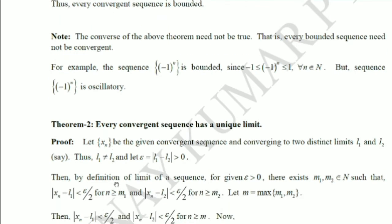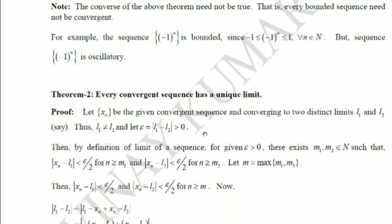The next theorem: every convergent sequence has a unique limit. Given a convergent sequence, we know it has a unique finite limit, and we must prove that limit is unique. Let us assume, for contradiction, that the sequence xn has two distinct limits L1 and L2. Since they are distinct, L1 cannot equal L2.